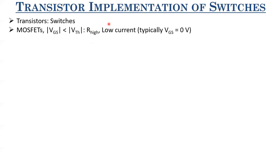When VGS is less than VTH (in terms of magnitude), the MOSFET shows high resistance and low current. Typically, VGS = 0 represents the off state when the MOSFET acts as a switch — unlike analog circuits where we bias to some VGS in saturation. We talk about two distinct input levels: VGS = 0 represents logic level zero, and when |VGS| is greater than |VTH|, the MOSFET acts like a closed switch.